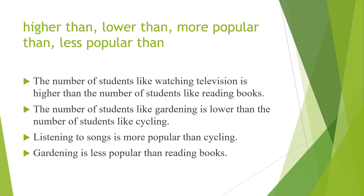Here you can see 'higher than', 'lower than', 'more popular than', and 'less popular than'. These are comparative forms of adjectives. We use these words to compare the bars in a bar graph. Examples: 'The number of students who like watching television is higher than the number of students who like reading books.' 'The number of students who like gardening is lower than the number of students who like cycling.' 'Listening to songs is more popular than cycling.' 'Gardening is less popular than reading books.'